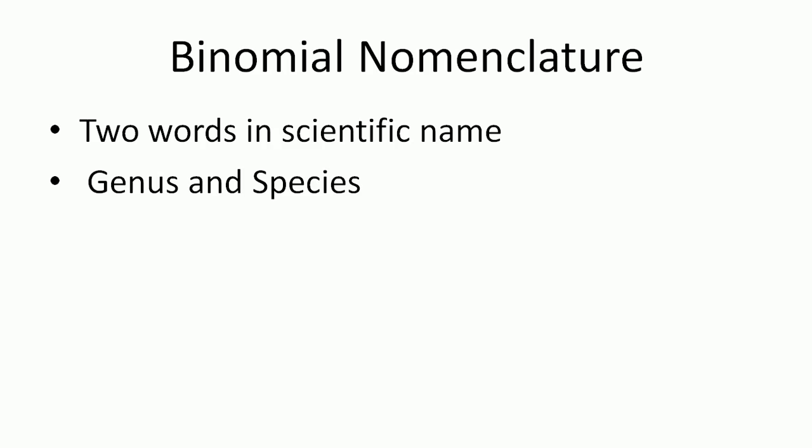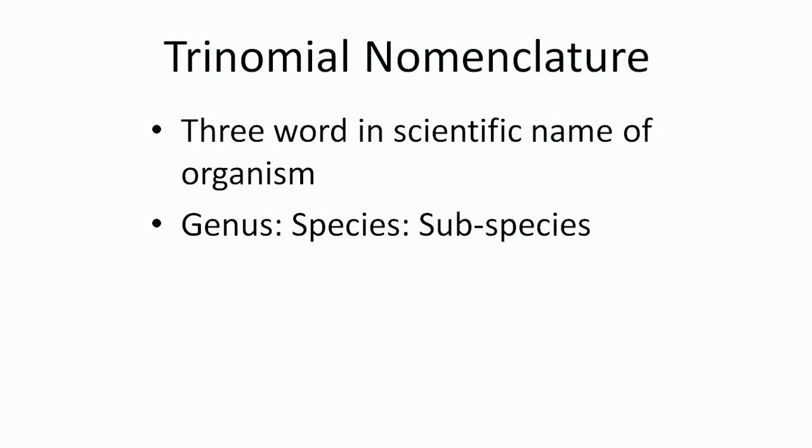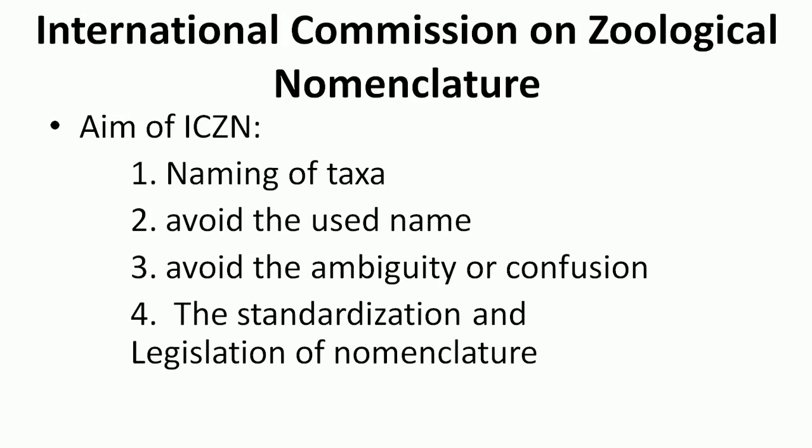In binomial nomenclature, any scientific name of an organism consists of two words — the first word is the genus name and the second word is the species name. This is known as binomial nomenclature. There is also trinomial nomenclature, where the scientific name consists of three words: genus name, species name, and subspecies name.